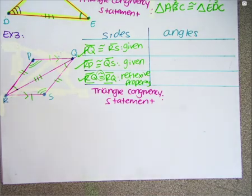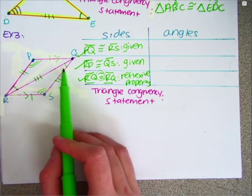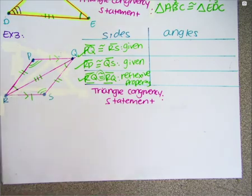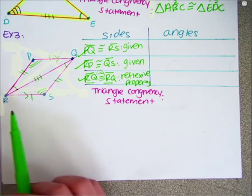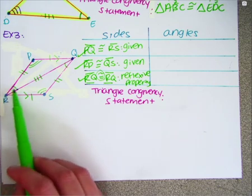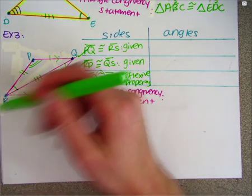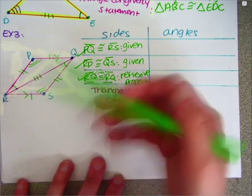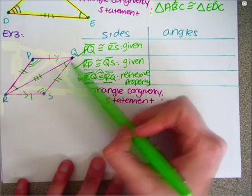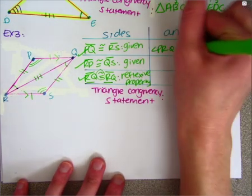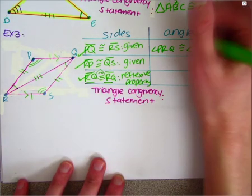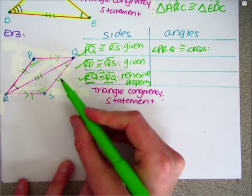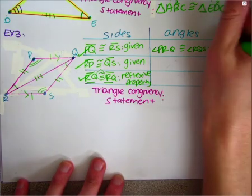Now I need to show my angles are congruent. I see two angles each with one arc, which means they're congruent. I can't just call this angle R because there's more than one angle there, so I name it with three letters. Angle PRQ is congruent to angle RQS, and since it was already marked in my picture, the reason is given.